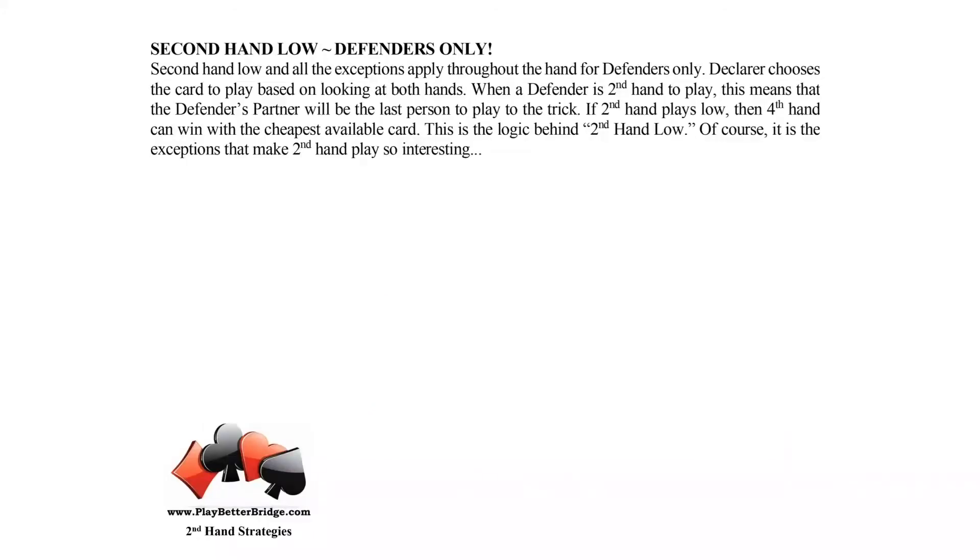Second hand low is for defenders only. I sometimes hear declarers play low from dummy and announce second hand low, but it's not for declarer. Declarer has 26 cards they're looking at and makes their decision of whether to play low from dummy or from their hand based on the card combination between the two hands.